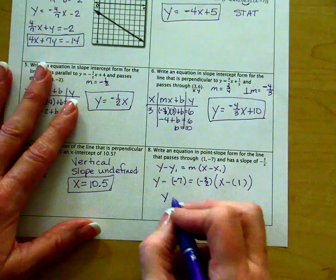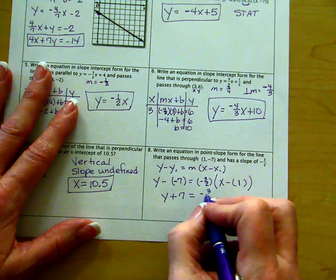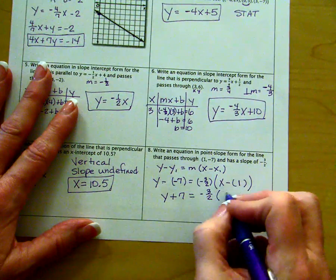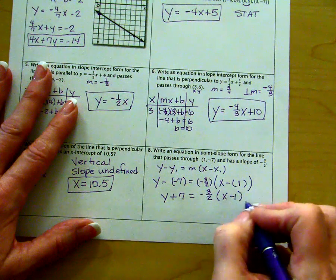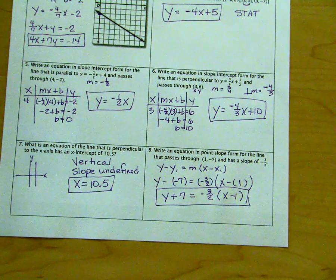Y minus negative seven is the same as y plus seven. Slope is negative three-halves. And this becomes x minus one. It told us to leave it in point-slope form, so we are finished with problem number eight.